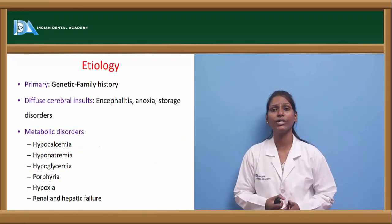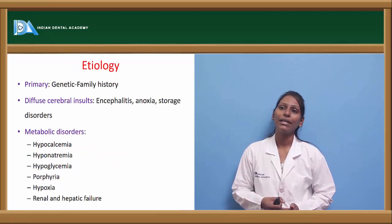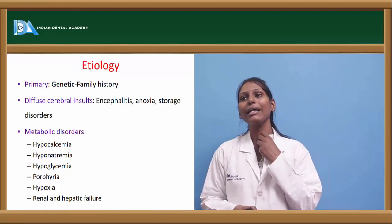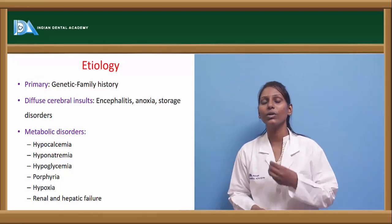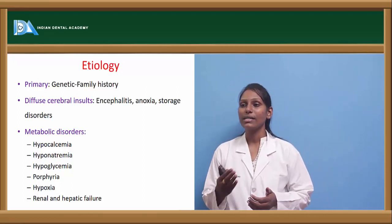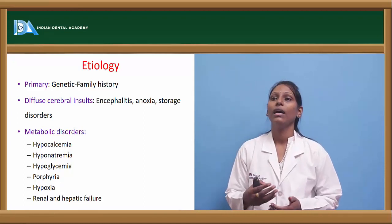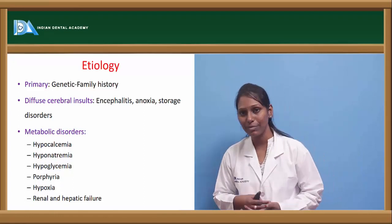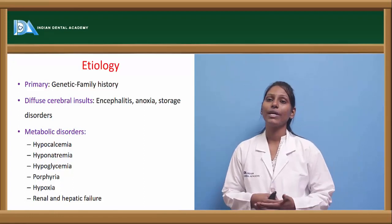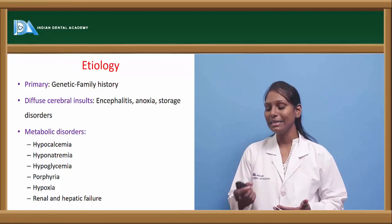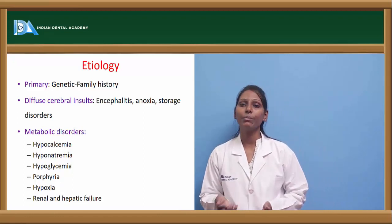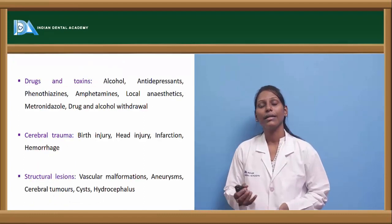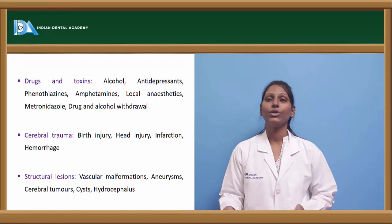Coming to etiology, it is usually primary or secondary. Primary epilepsy has a genetic or familial history. Other etiologic conditions include diffuse cerebral insults such as encephalitis, anoxia, and storage disorders. Metabolic disorders such as hypocalcemia, hyponatremia, hypoglycemia, porphyria, hypoxia, and renal and hepatic failure can also precipitate seizures that eventually transform into epilepsy.